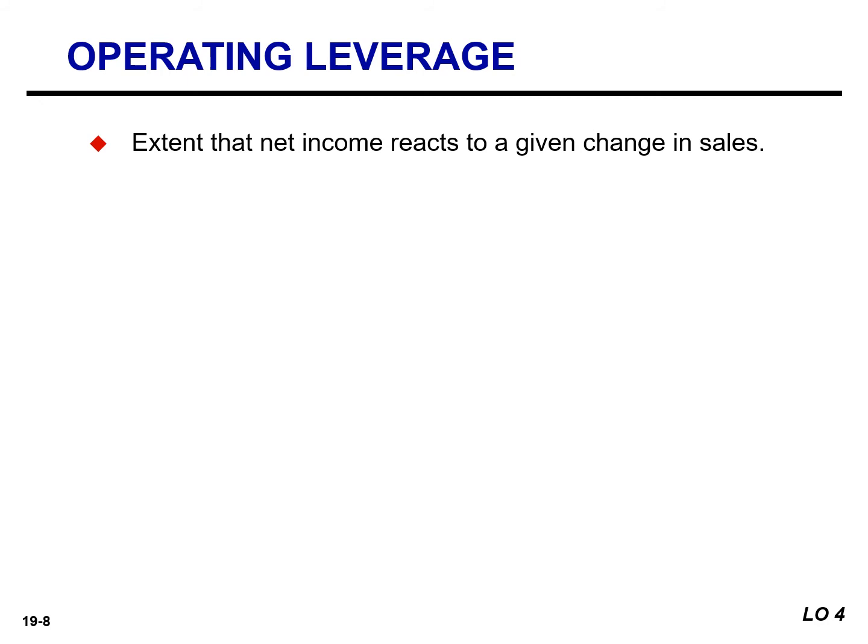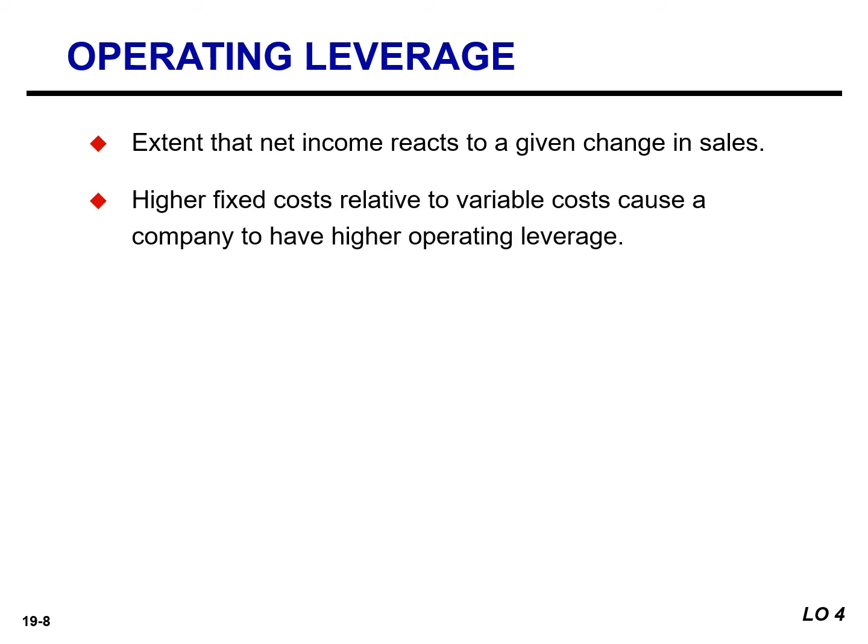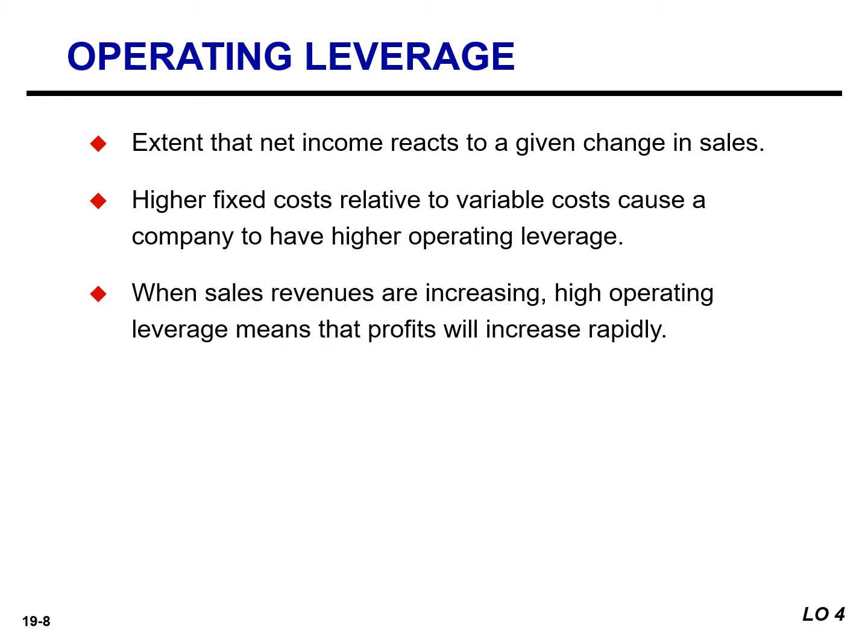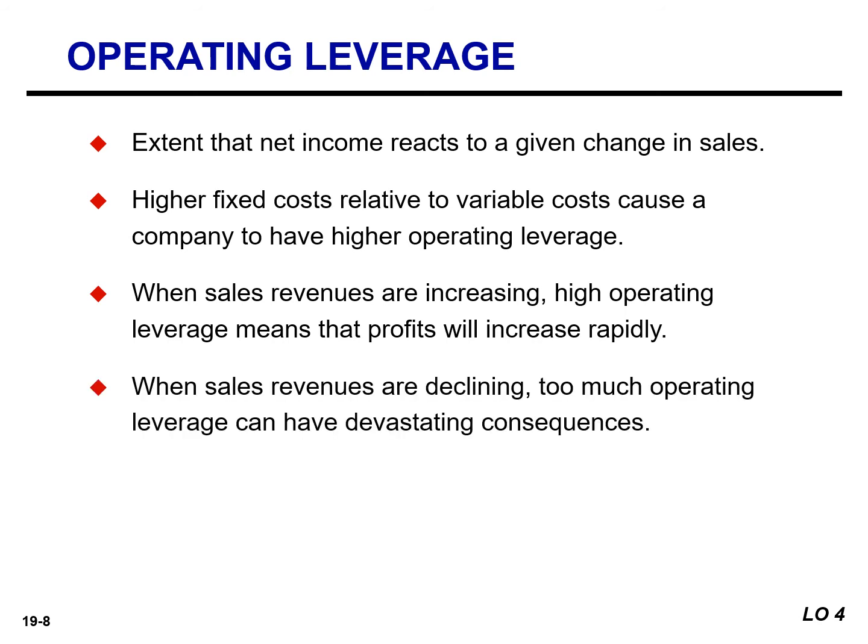Operating leverage refers to the extent to which a company's net income reacts to a given change in sales. Companies that have higher fixed cost relative to variable cost have a higher operating leverage. When a company's sales revenue is increasing, high operating leverage is a good thing because it means that profits will increase rapidly. But when sales are declining, too much operating leverage can have devastating consequences. Calculating the degree of operating leverage helps managers determine how sensitive the company's net income is to changes in sales.